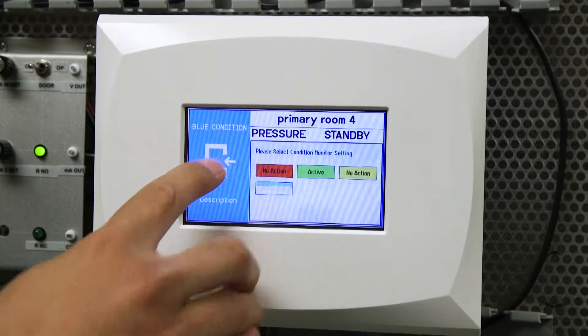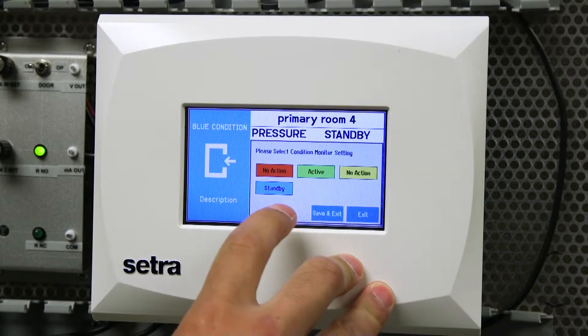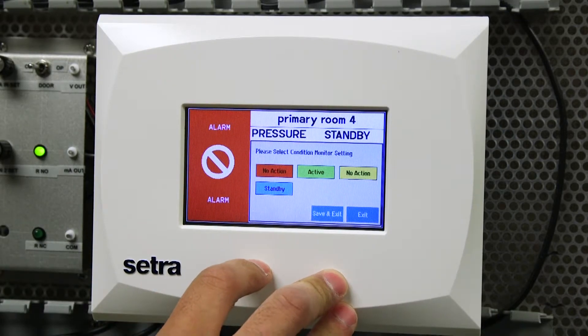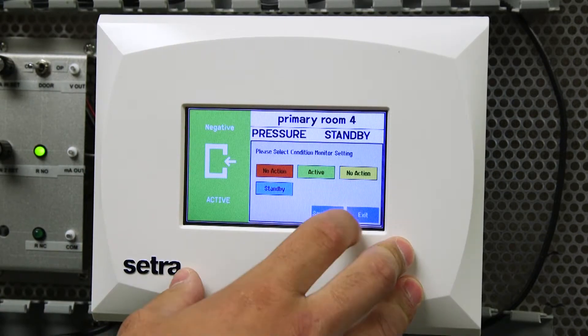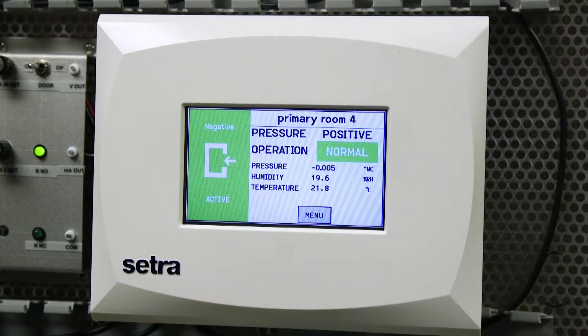We can also choose the color banner here on the side and change between the four different colors. Red, if we switch to red it's not going to do any changes. Same thing with yellow but if we move into green it causes the unit to go into active mode. Hit save and exit and the unit will start monitoring.